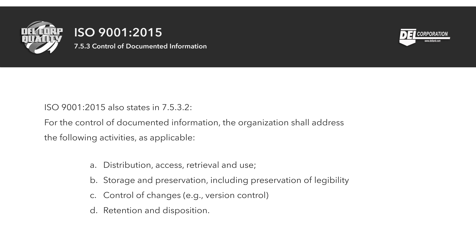ISO 9001:2015 also states in 7.5.3.2 that for the control of documented information, the organization shall address the following activities as applicable: a) distribution, access, retrieval, and use; b) storage and preservation, including legibility; c) control of changes, for example version control.